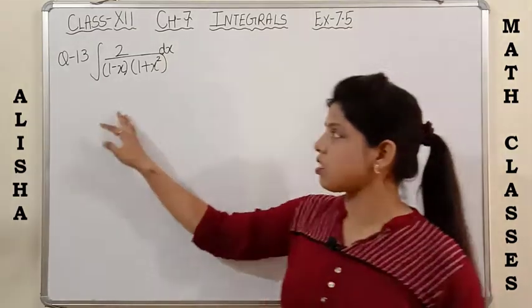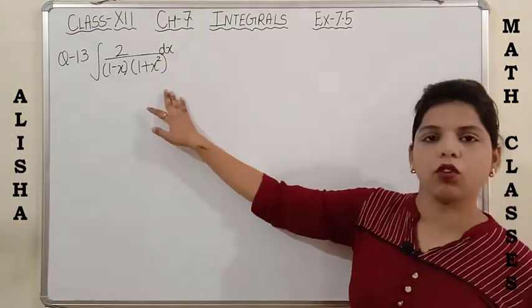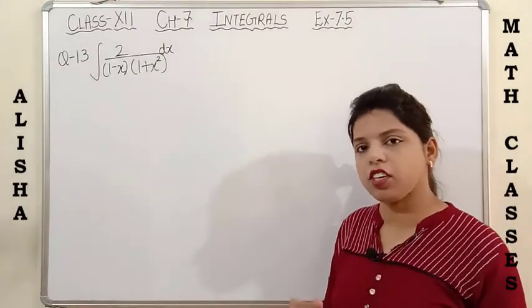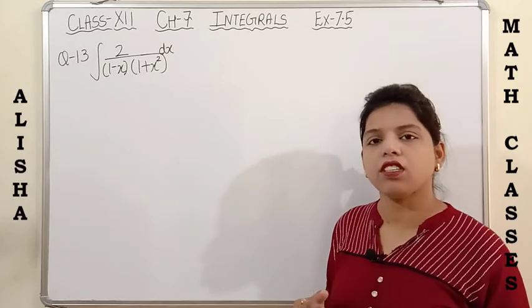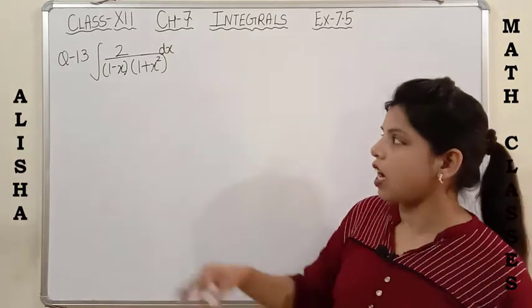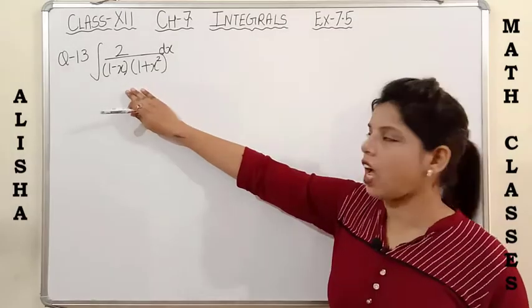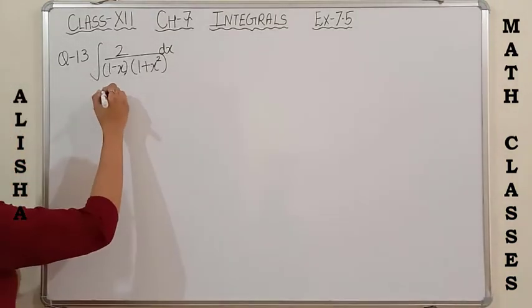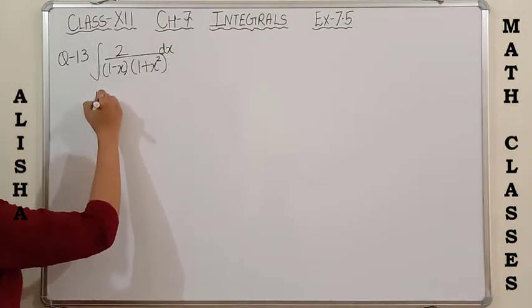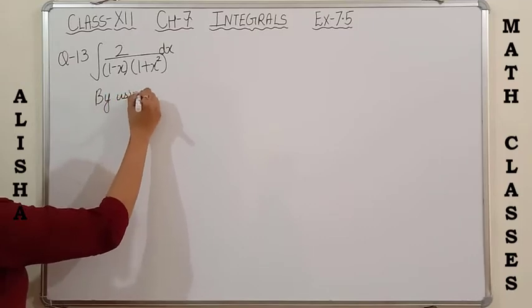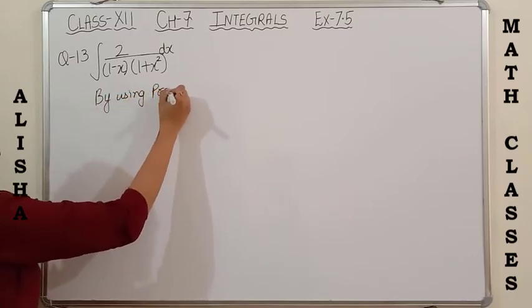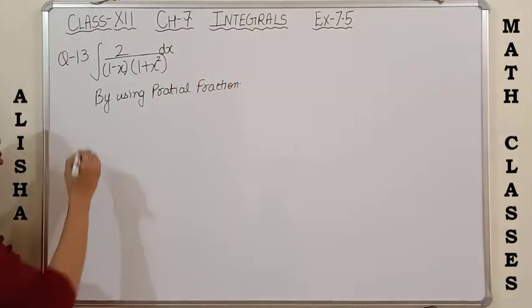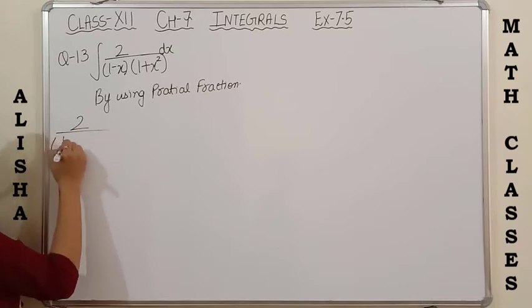Let's start from question number 13: integration of 2 upon (1 minus x) into (1 plus x squared) dx. I have given a brief introduction in the starting of the video covering questions 1 to 6, explaining when we have a linear and quadratic factor in the denominator. Without wasting time, let us start by using partial fraction. By partial fraction, we can write down this function as: